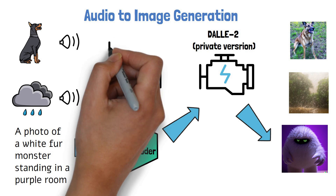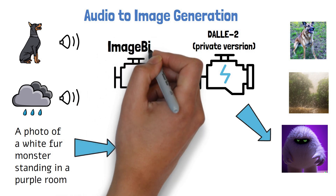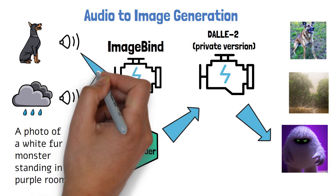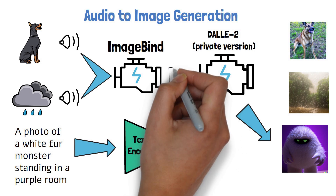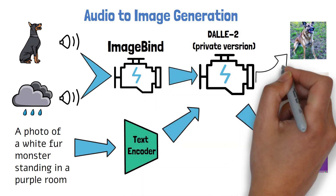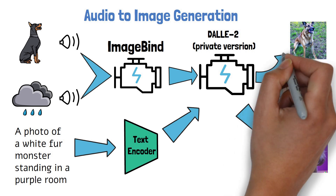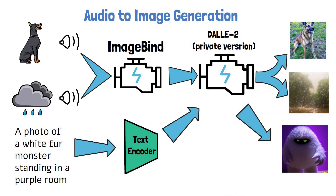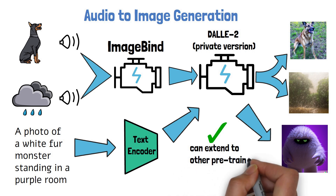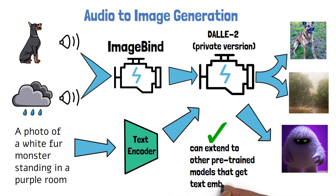With ImageBind, what the researchers did is run the audio via ImageBind to get an embedding, and use that embedding instead of a text prompt embedding in DALL-E 2. This way it is capable of generating images using audio, which is very impressive. This opens the door to do similar things with other models that operate on text embeddings, so we may hear of such progress in the future.